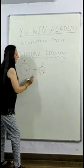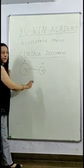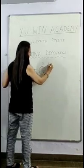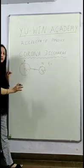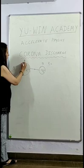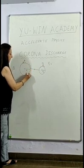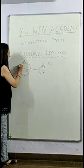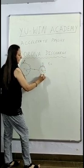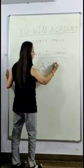The charge will flow from sphere A to sphere B until both come to the same common potential. We know that conductors have the same potential throughout. When you connect one sphere with another using a conducting wire, the whole system becomes one conducting surface, so the potential of both surfaces should be the same.